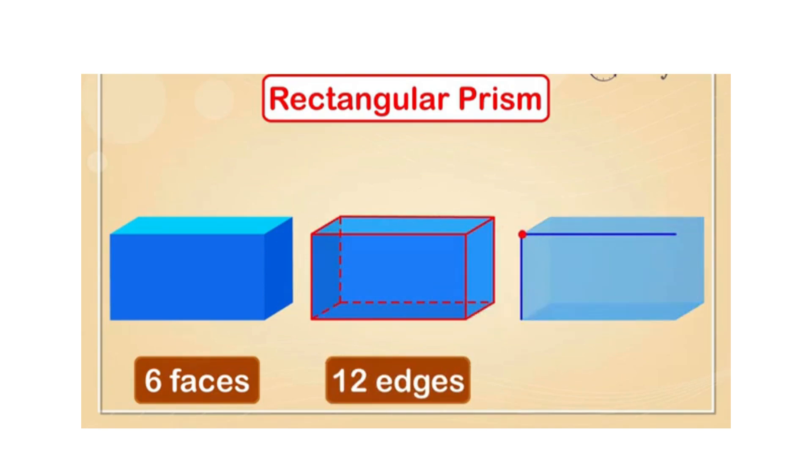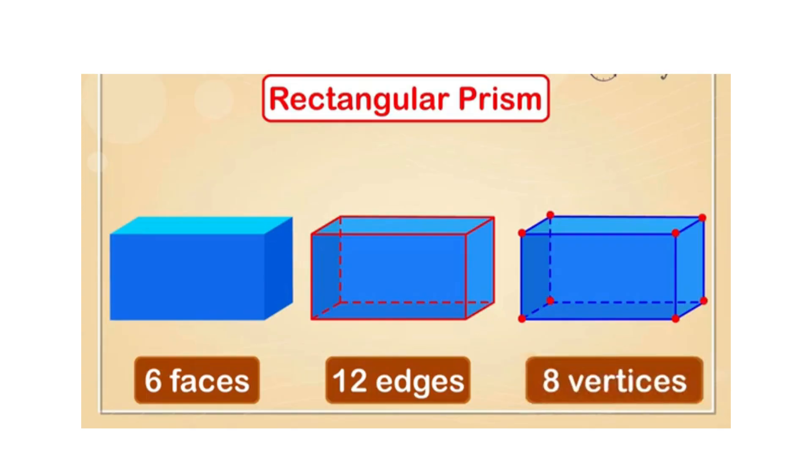The point where two edges meet is called a corner or vertex. Let's find out how many vertices there are in a rectangular prism. There are 1, 2, 3, 4, 5, 6, 7, and 8 corners or vertices.